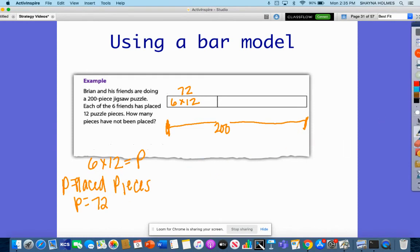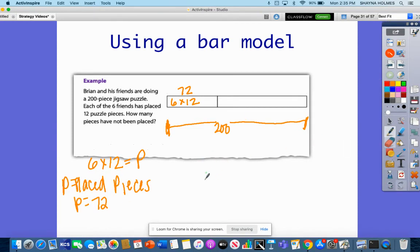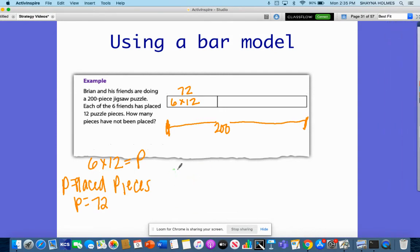Now that's my first equation: 6 times 12 equals p, and p equals placed pieces, which is 72. My next one, let's do it in green. This one is going to be what's left. Let's do u for unplaced—unplaced pieces. So if I have 200 and I take away what's been placed, I will find unplaced. So here's my next equation. Now I'm just going to substitute in p equals 72, so minus 72, because I already found p.